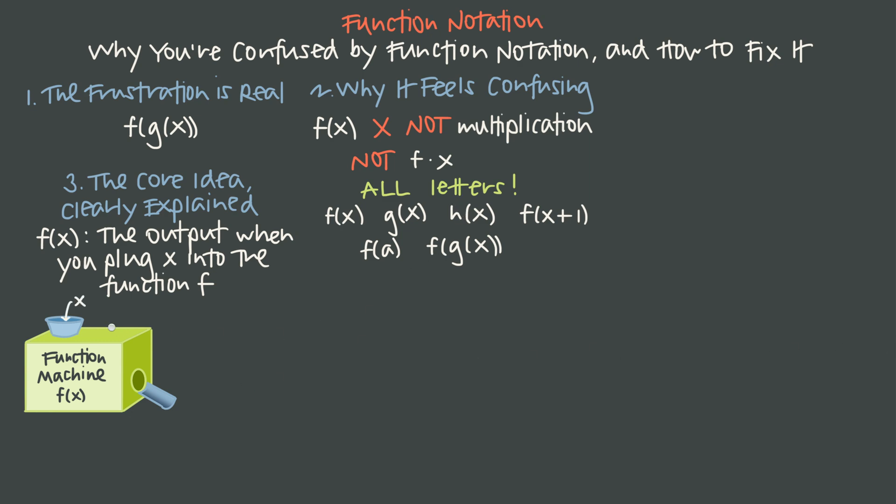In other words, if we feed x values into the function machine f of x, we put in one x value, and then this machine is going to spit out for us a different value called y or f of x. And it's the result that we get when we run x through the function f.